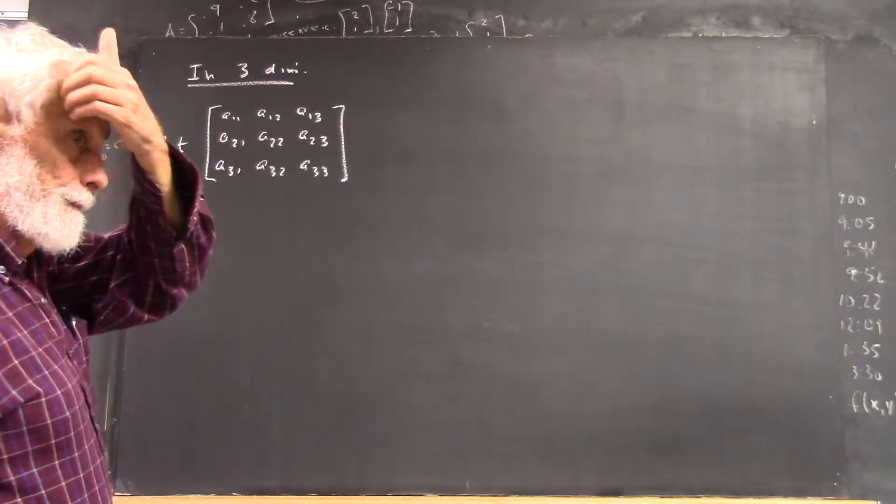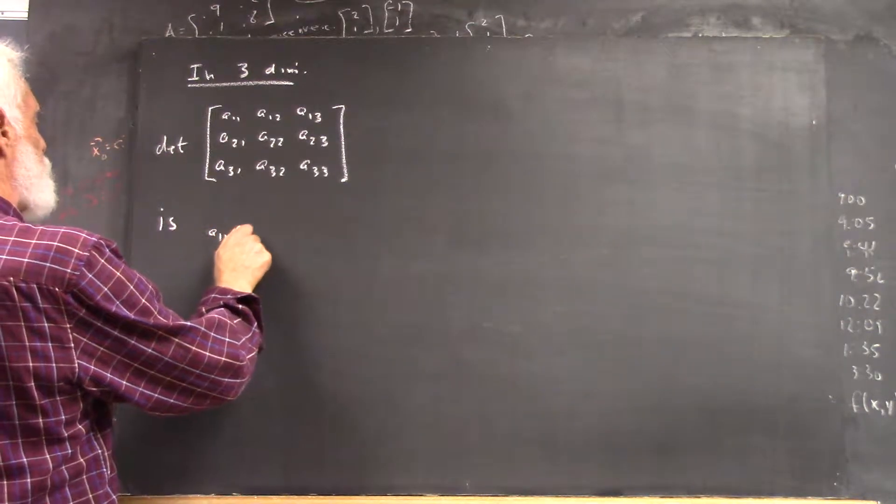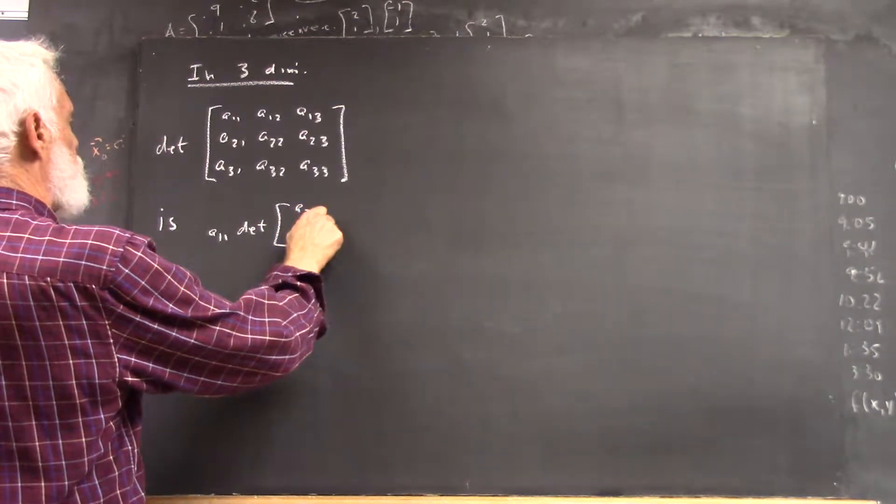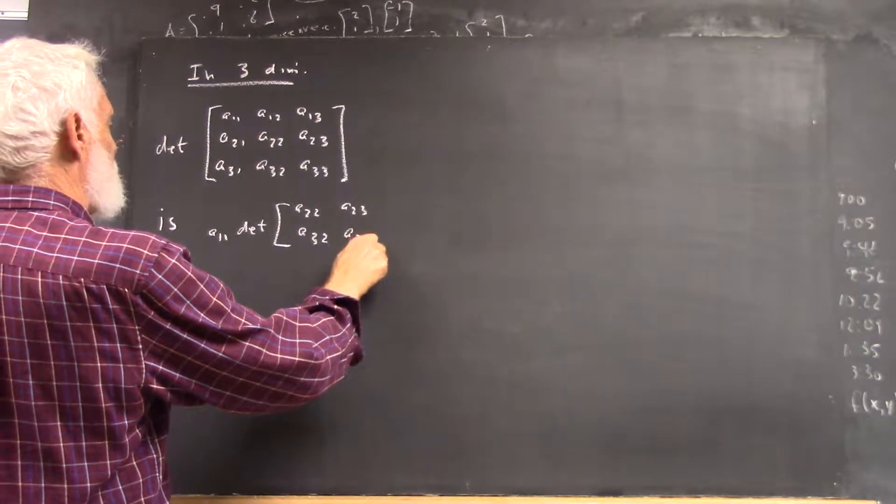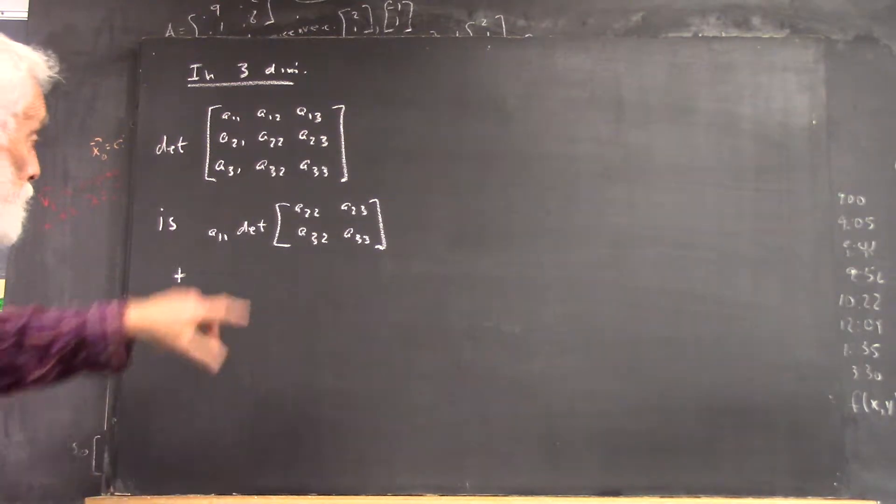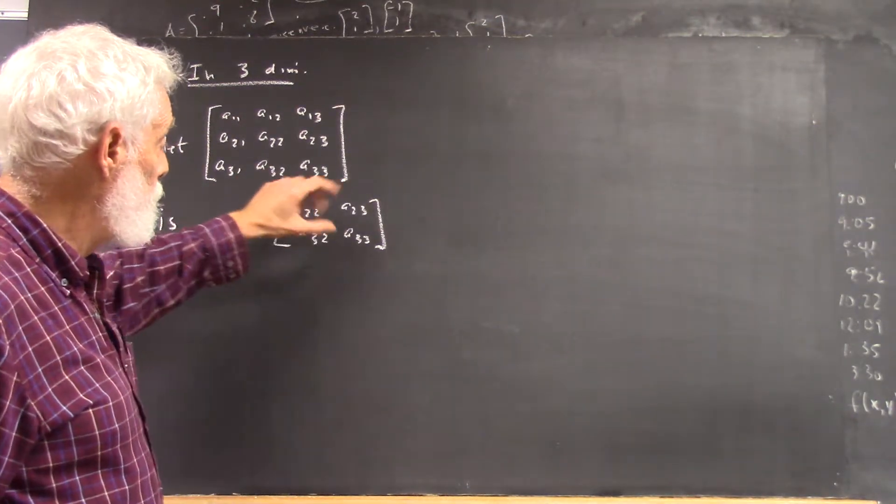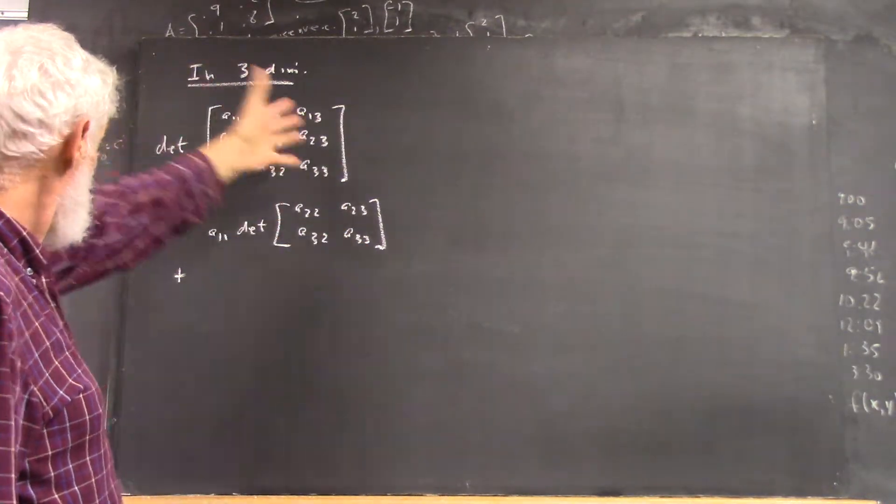So this determinant is A11 times the determinant of A22, A23, A32, A33, plus there's more. Let you see where this is. Do you see this A22, A23, A32, A33 sitting any place within this?